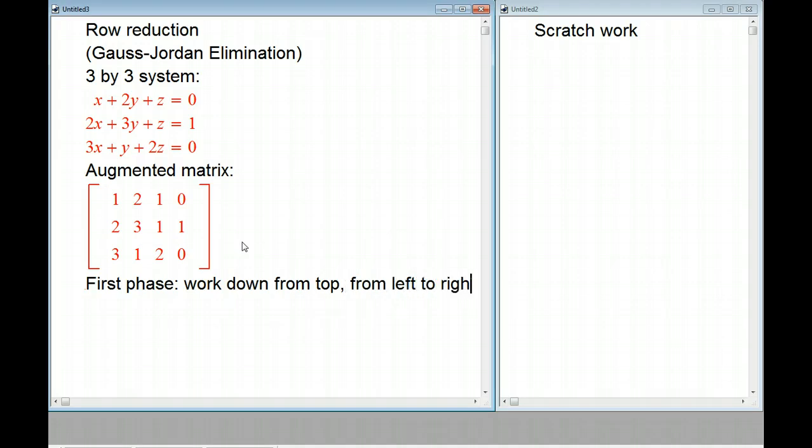One thing about using row reduction is that theoretically there's a lot of freedom you have to play off these rows against each other, just like here you'd add a multiple of equation to another or do various things to eliminate variables. What I'm going to emphasize here is a very systematic way of doing it.